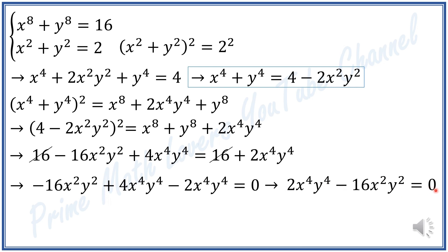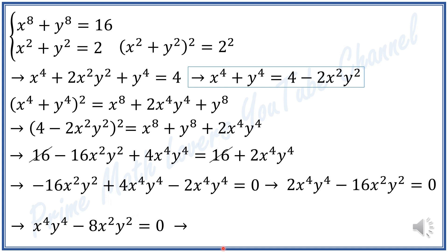I divide both sides of the equation by 2, giving x⁴y⁴ minus 8x²y² equals 0. Factoring out x²y², I have x²y² times (x²y² minus 8) equals 0.